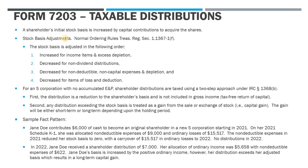When we talk about shareholder stock basis, our initial basis is the capital contribution to the company in exchange for the stock. If a company issues you shares and you pay funds for those shares, that's the initial capital contribution — that's an increase to your basis. After that event, your stock basis is adjusted under a set of rigid ordering rules. Looking at Treasury Reg Section 1.1367-1(f), these are the default ordering rules for how we adjust our stock basis up and down. Our basis is first increased by any income items and excess depletion, and then it's decreased by non-dividend distributions.